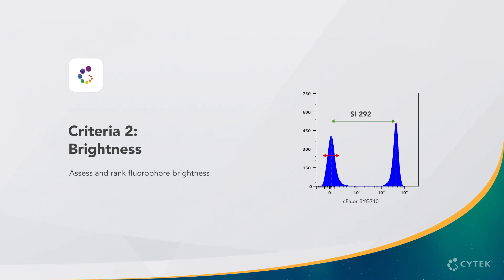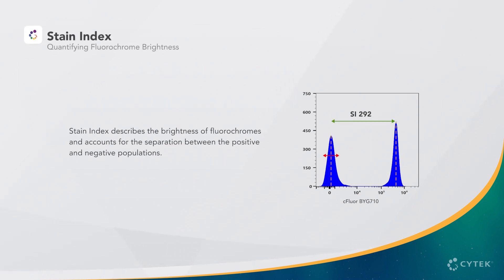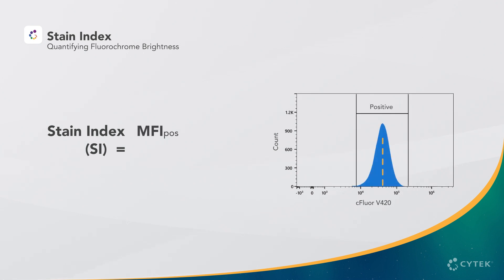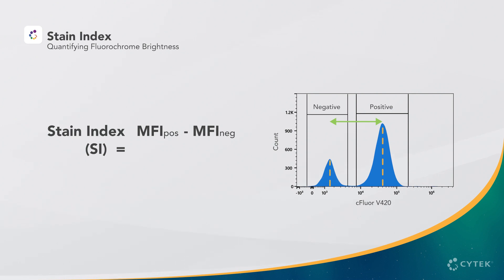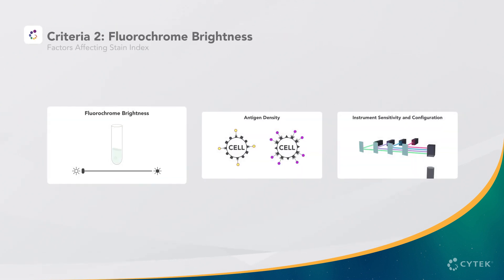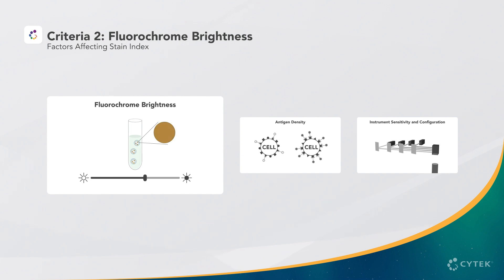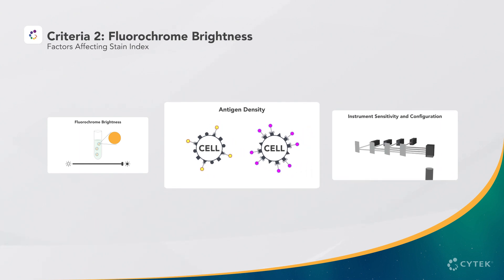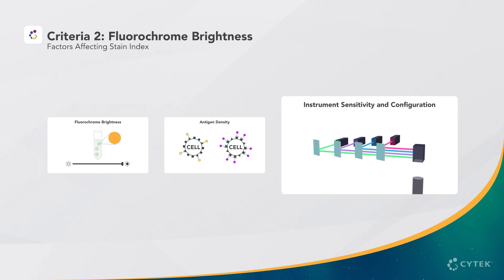The second criteria to consider after uniqueness is fluorochrome brightness. Stain index is a practical way to describe the brightness of fluorochromes and accounts for the separation between positive and negative populations. The formula to calculate stain index takes the median fluorescence intensity, or MFI, of the positive population minus the MFI of the negative, divided by 2 times the standard deviation of the negative. Bright fluorophores typically have higher stain index values. However, stain index can also be affected by antigen expression levels, antibody titer, or instrument sensitivity, configuration, and setup.